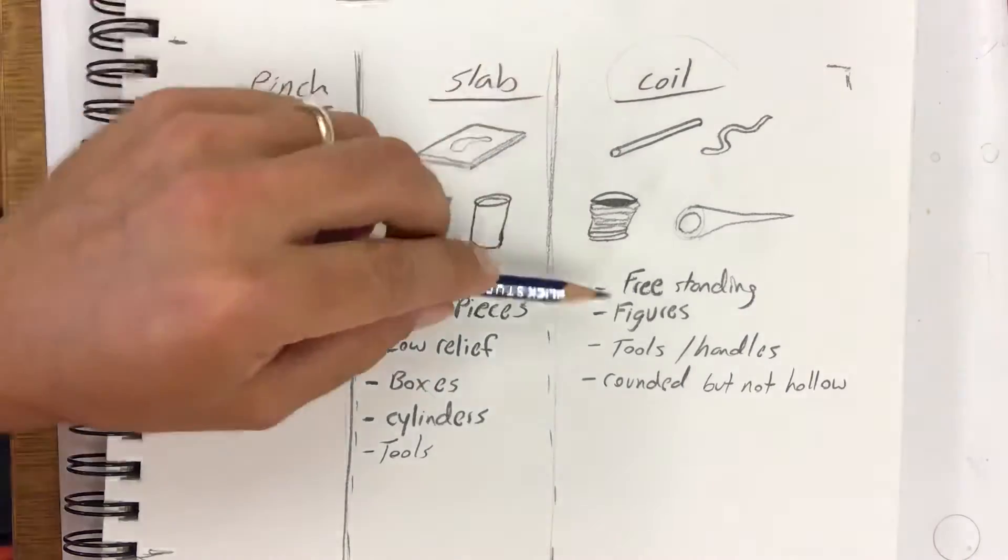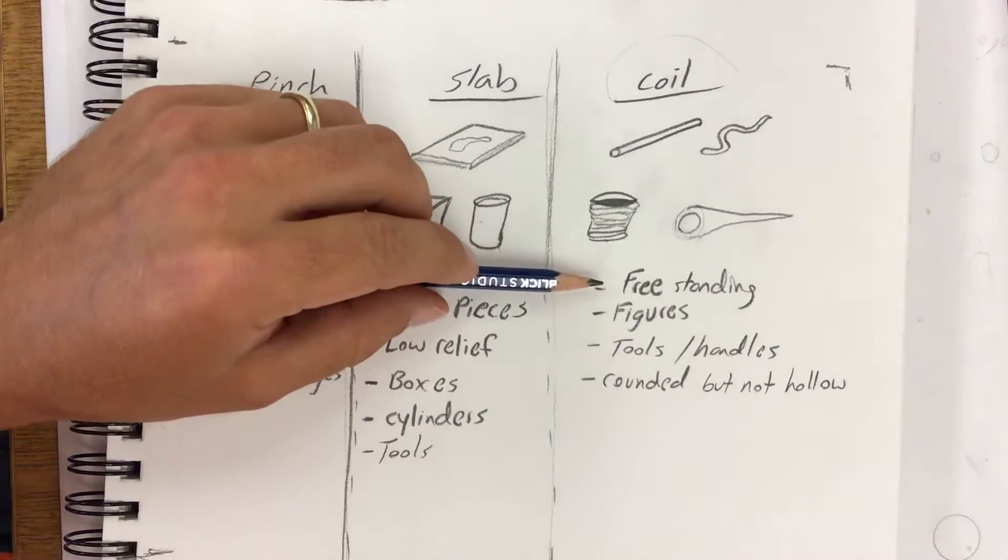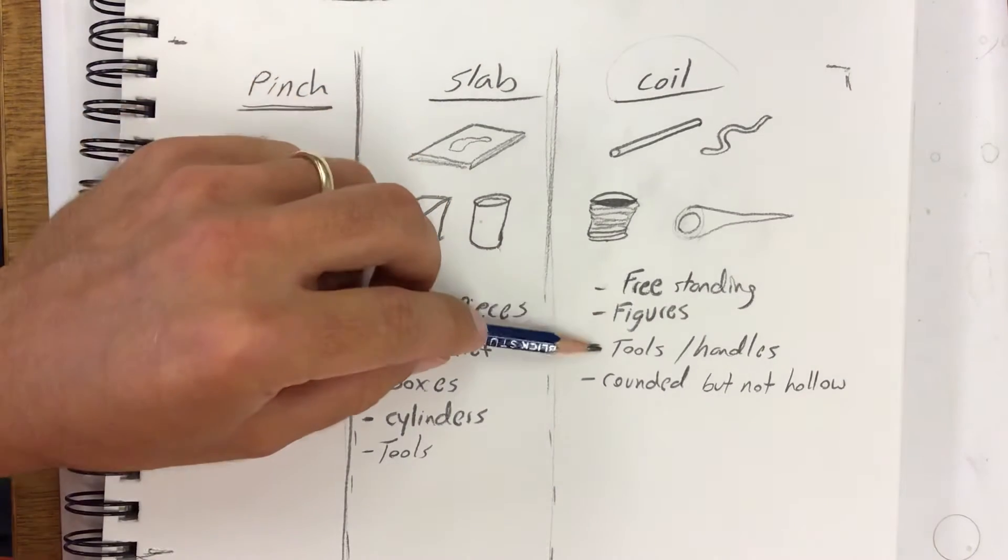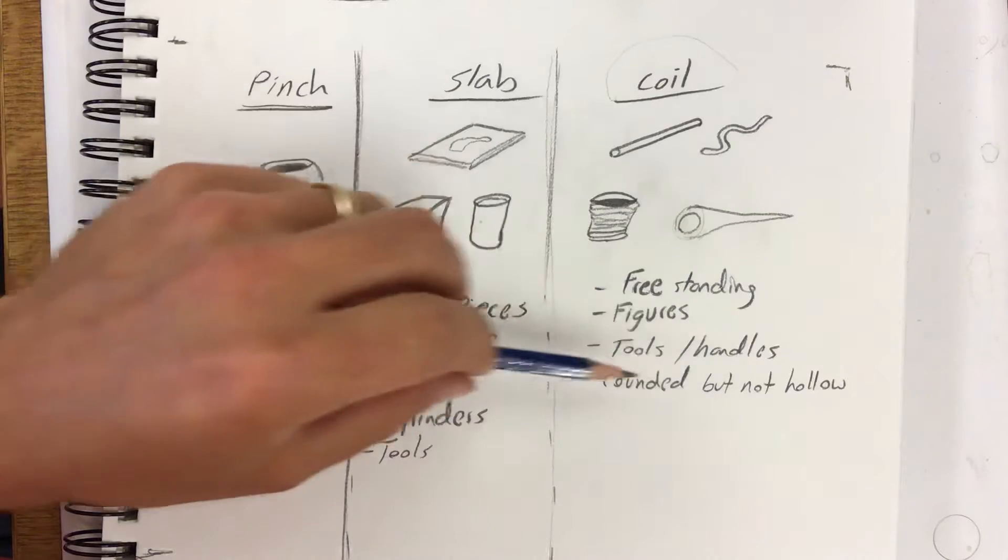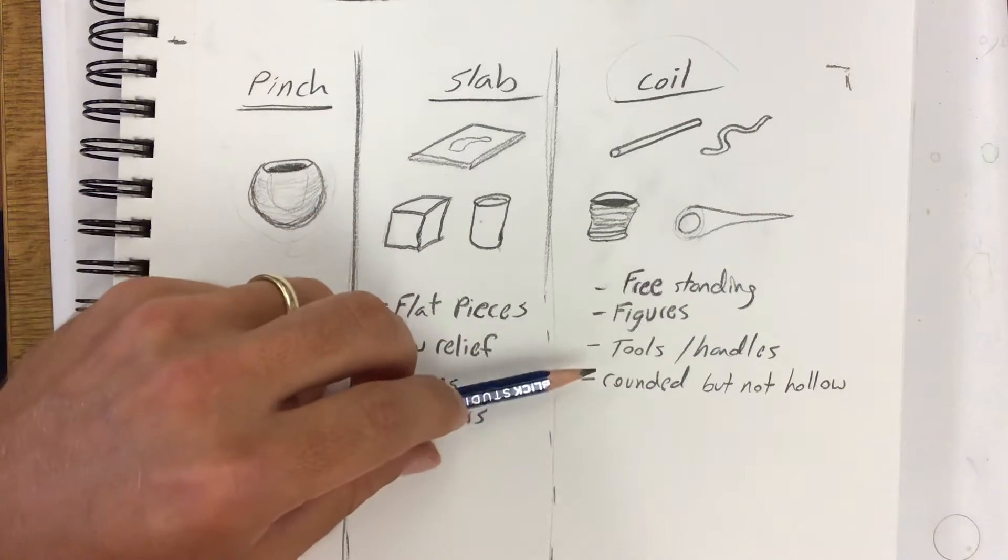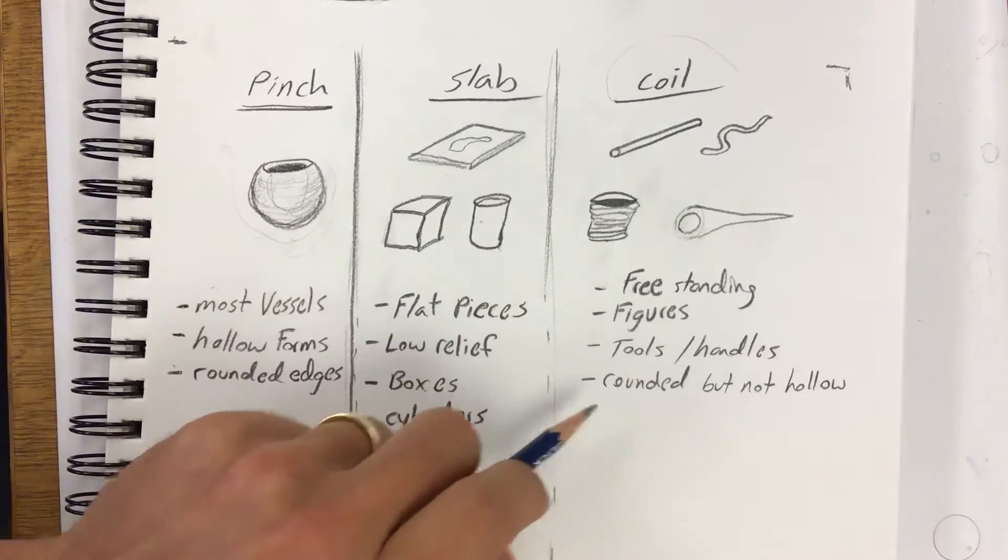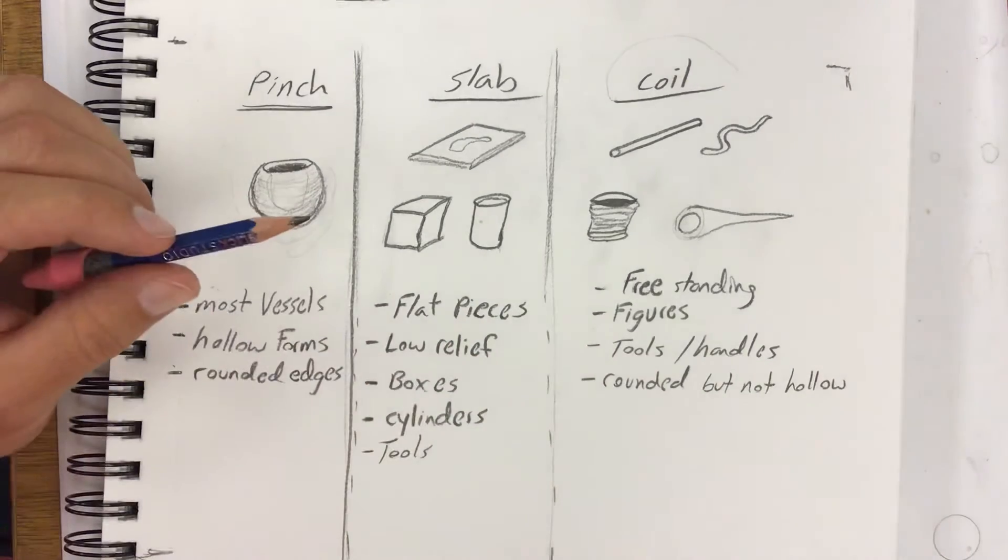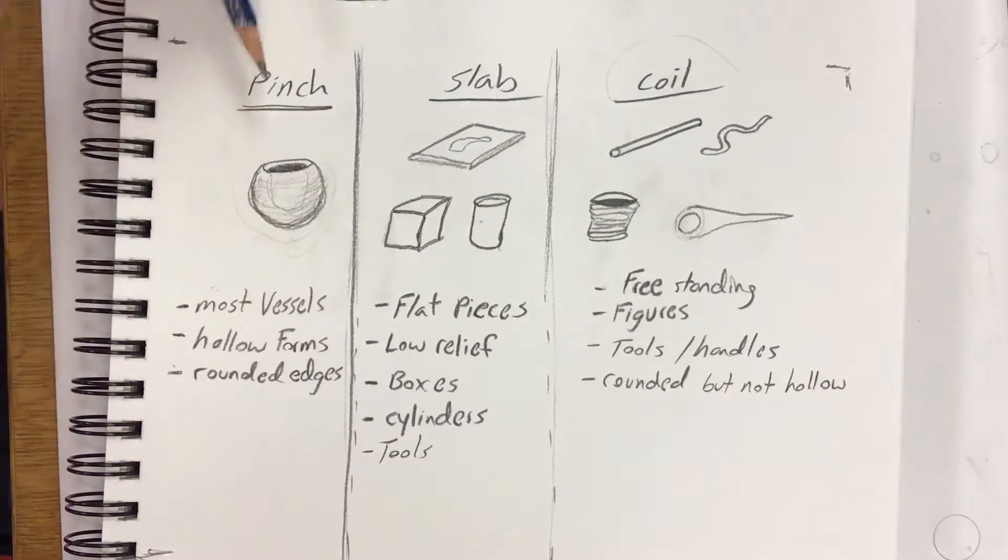Coils - freestanding sculptures. You can build figures out of a variety of sizes of coils. You can build some of your tools like your handles and other parts with coils, and anything really that is rounded but not completely hollowed out. So that could fall in many different parts of your design or categories.